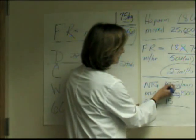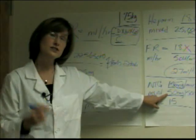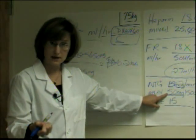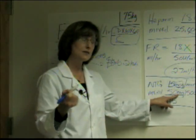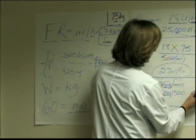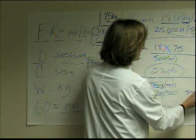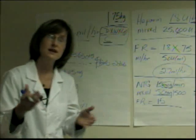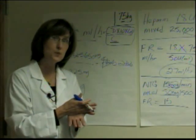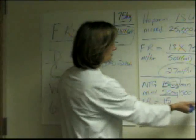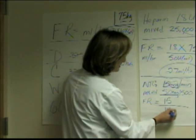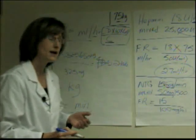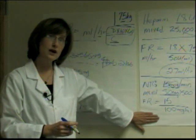You have to change these milligrams to micrograms before dividing by the volume in the nitroglycerin bag. Take 50 times 1000, which gives 50,000, then divide by 500 milliliters. That gives me the concentration in micrograms per milliliter. Dividing those two, my concentration is 100 micrograms per milliliter.